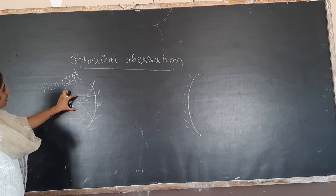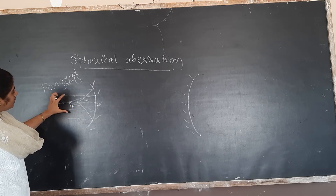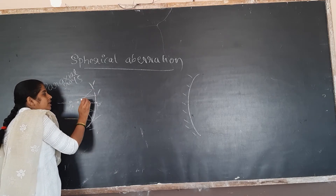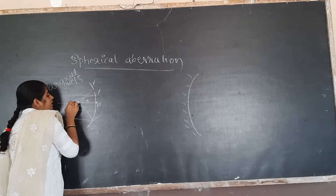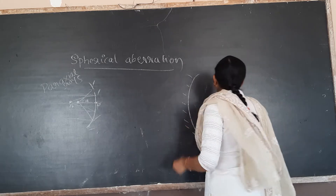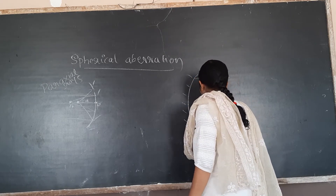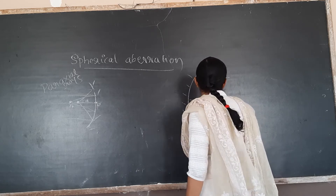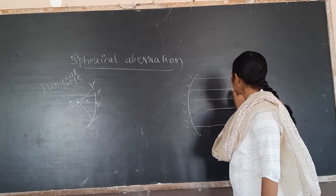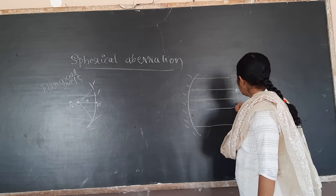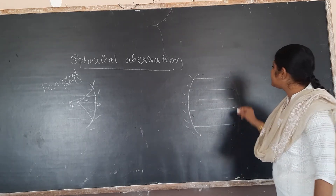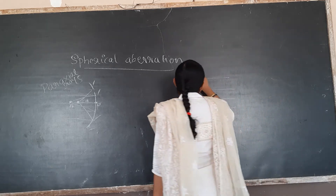When you consider paraxial rays which are parallel to the principal axis and near to the principal axis, these paraxial rays will bend less. So the focus of marginal rays will be near to the pole, but the paraxial focus is away from the pole. Now considering the convex mirror: the marginal ray will diverge more.